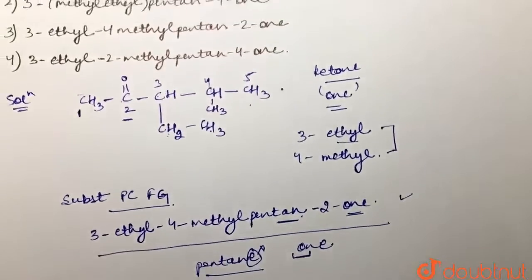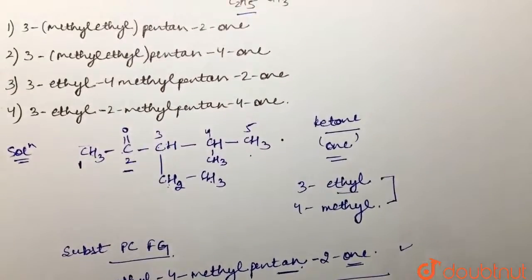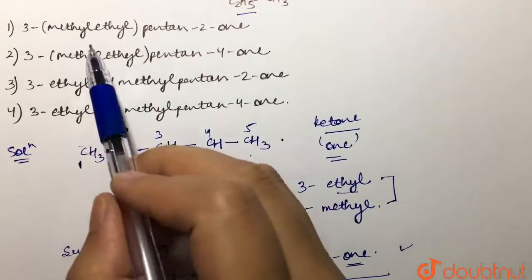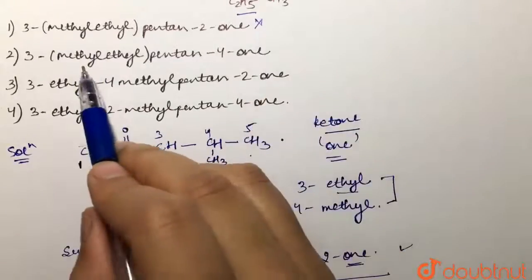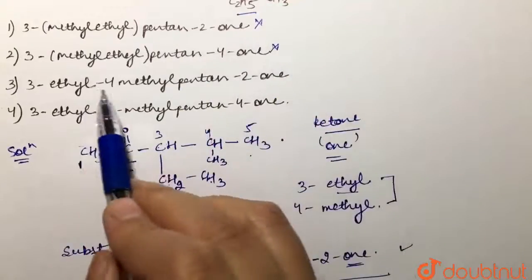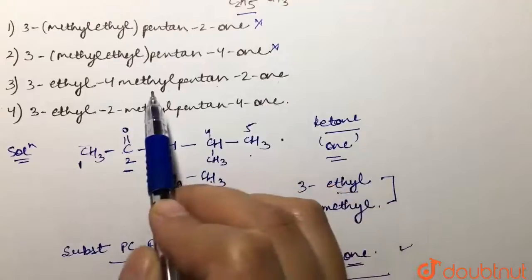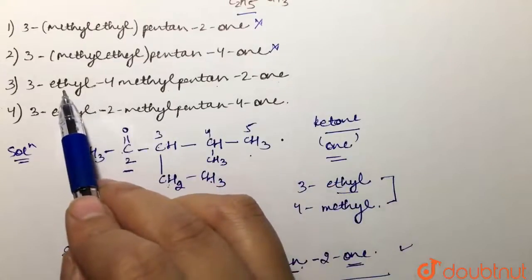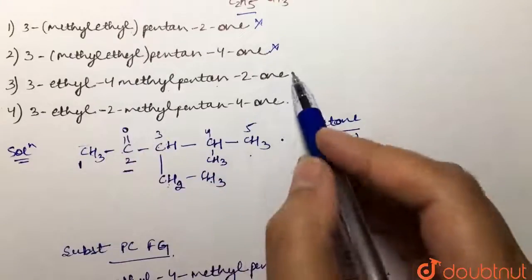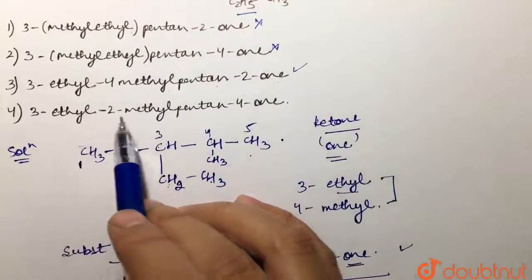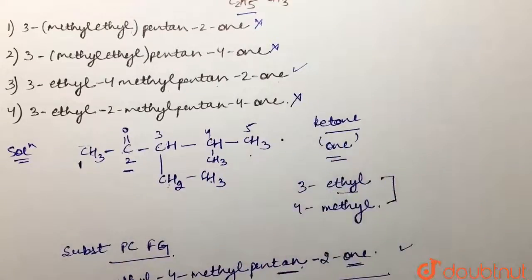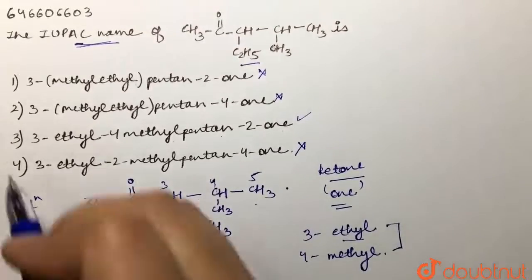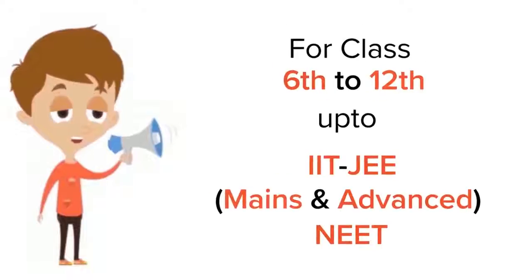Looking at the options: Option 1 says '3-methylethylpentane-2-one' — this is not correct because we don't have methyl-ethyl at third position. Option 2 is also not correct. Option 3 says '3-ethyl-4-methylpentan-2-one' — this is the correct numbering, with ethyl at third and methyl at fourth position. Option 4 says '3-ethyl-2-methyl', but methyl is not at second position, so that is wrong. The answer is option 3.